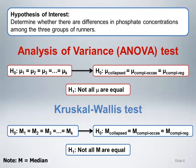The corresponding null and alternative hypotheses for the Kruskal-Wallis test are analogous to the analysis of variance, with the exception that the focus is on medians instead of means.